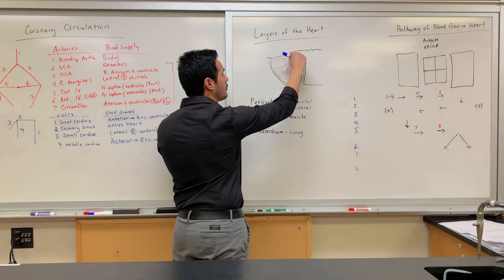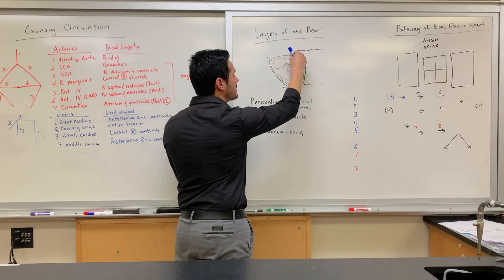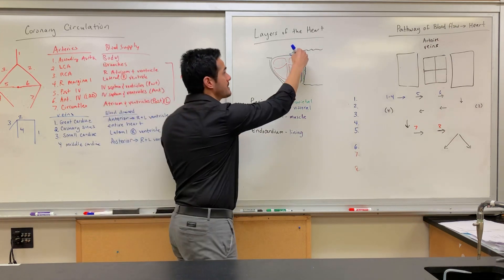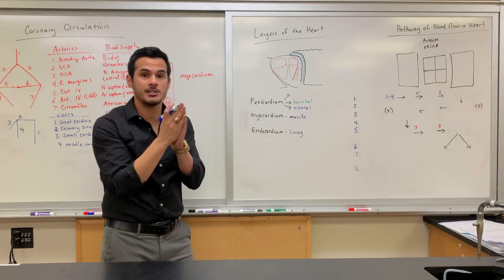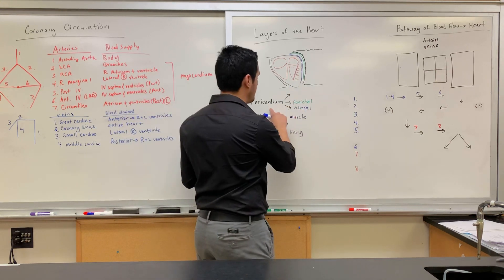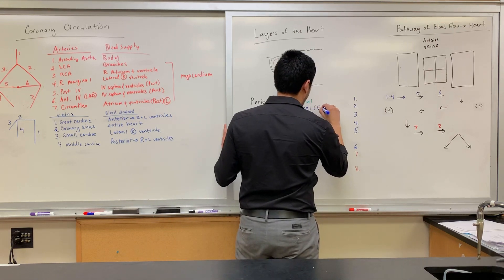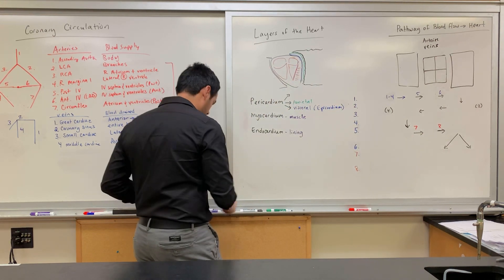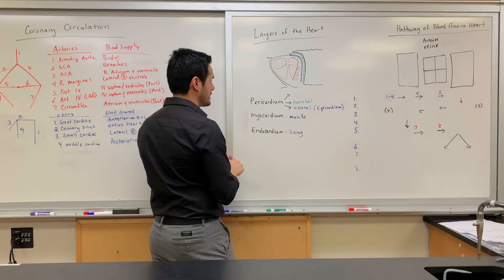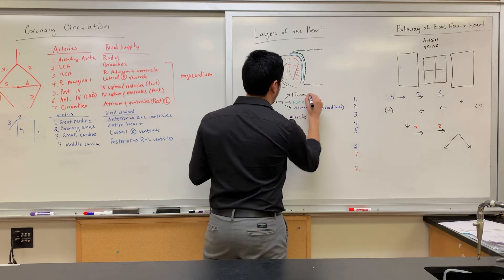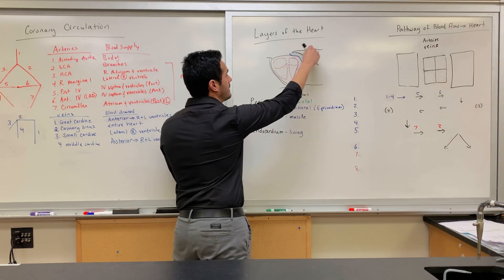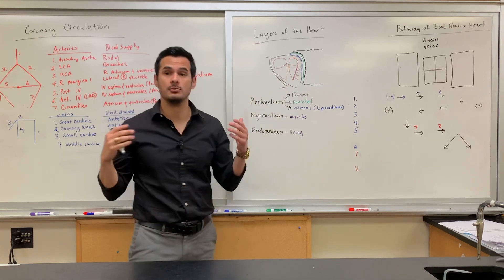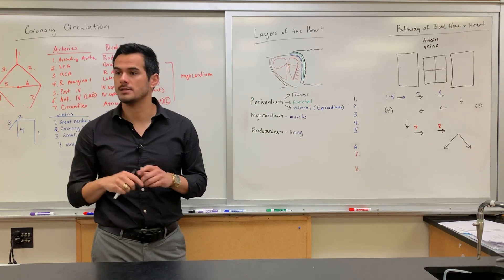The visceral pericardium folds to form the parietal layer. There is serous fluid found in between them to prevent friction between these different layers. The visceral pericardium is also called the epicardium. The last layer is the fibrous pericardium — a thick, dense connective tissue that connects the heart to its surrounding organs, including the lungs. It is a protective layer.